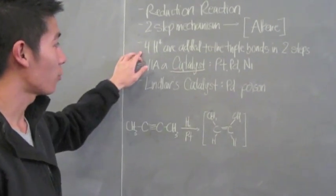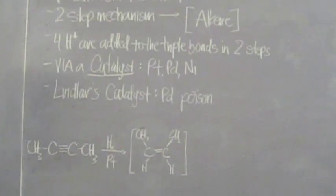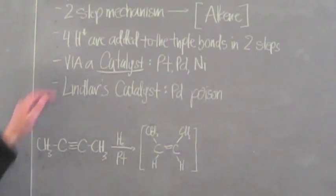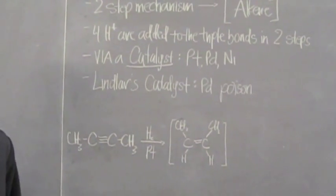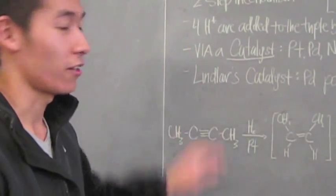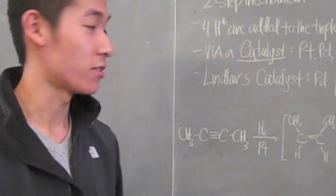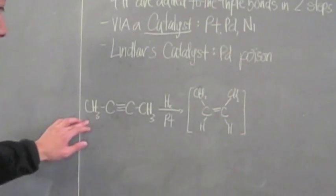In an alkyne reaction, we have four hydrogens that are being added across the triple bonds in two consecutive steps via some sort of effective catalyst such as platinum, palladium, or nickel. And we have something called Lindlar's catalyst, which is a palladium poison that stops the transition at an alkene itself.